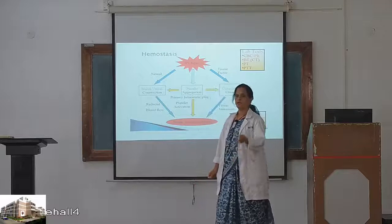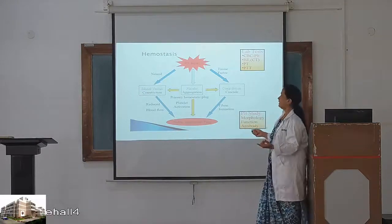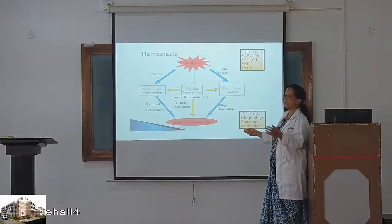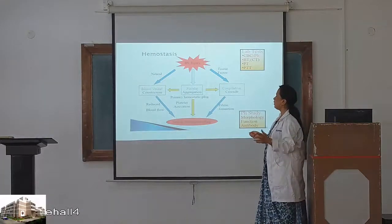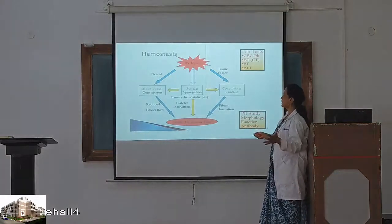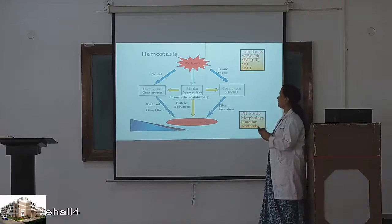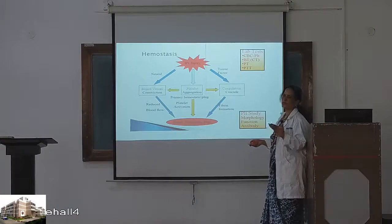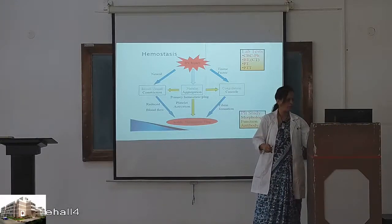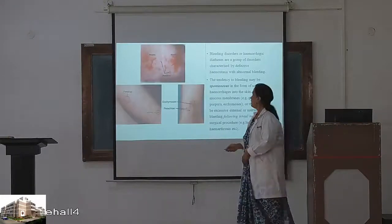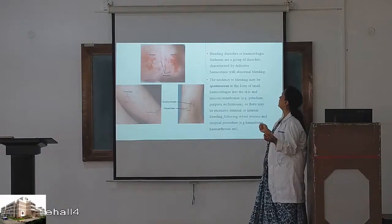This is the hemostasis you have learned in physiology. Blood vessel injury triggers a neural mechanism where the blood vessel constricts, reducing blood flow. Then platelets aggregate at the site of injury, forming a primary hemostatic plug. Platelet activation then forms a stable plug, and tissue factors activate the coagulation cascade, forming fibrin — a stable hemostatic plug — stopping hemorrhage.